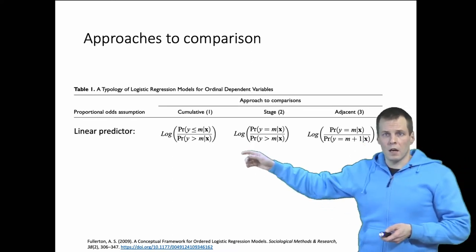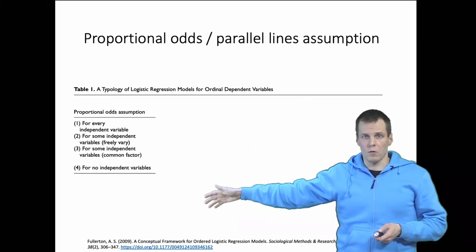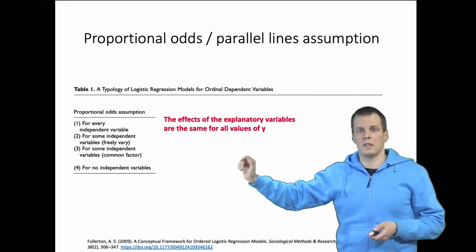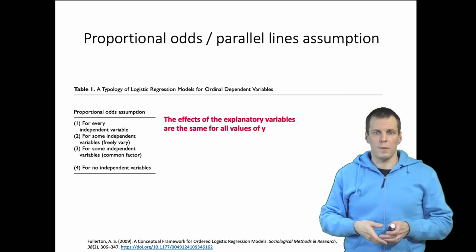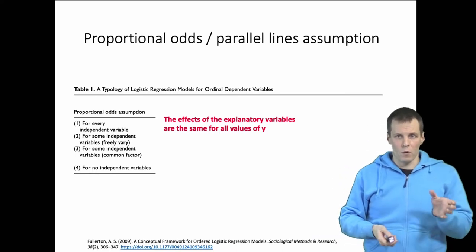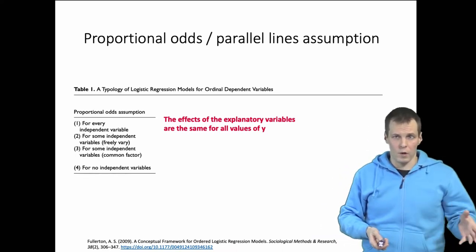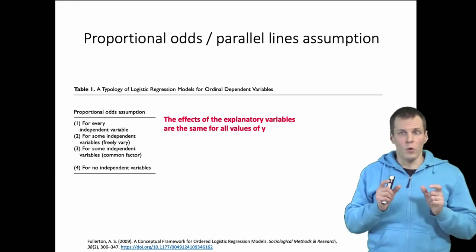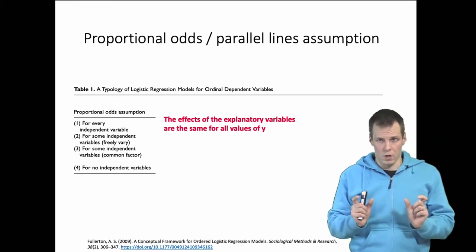Then we have the other dimension here: the proportional odds assumption. The first assumption is that the effects of the explanatory variables are the same for all values of y. So this is the parallel lines or proportional odds assumption, so that you only estimate one regression model.